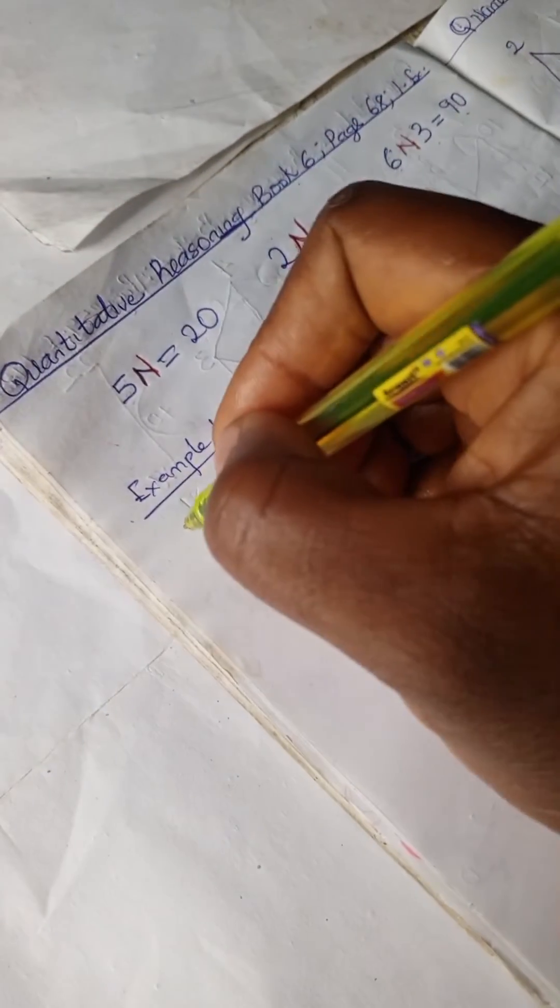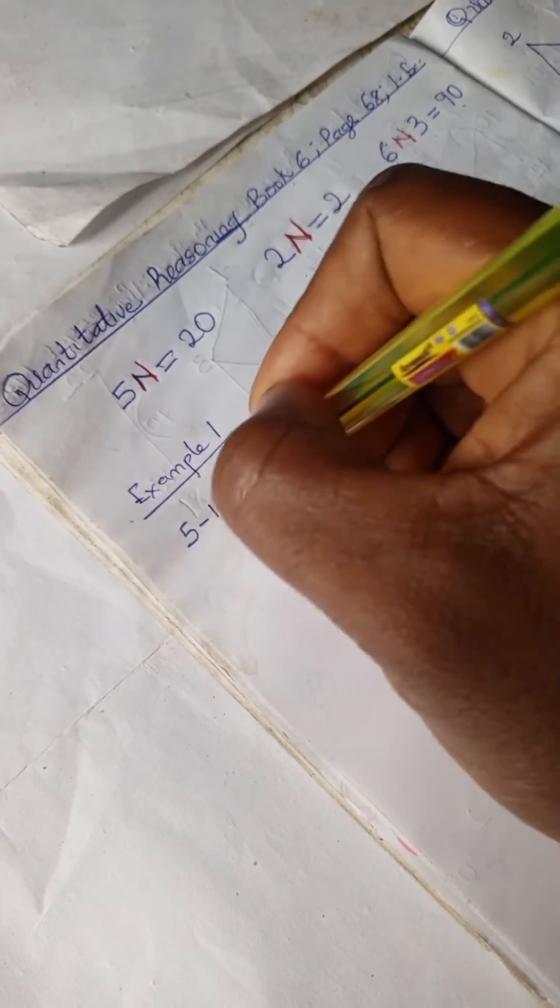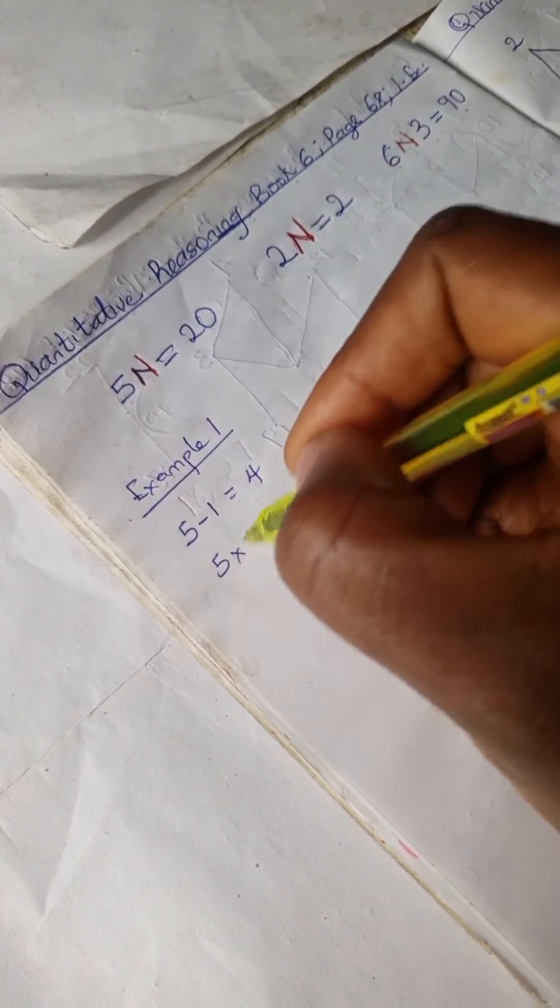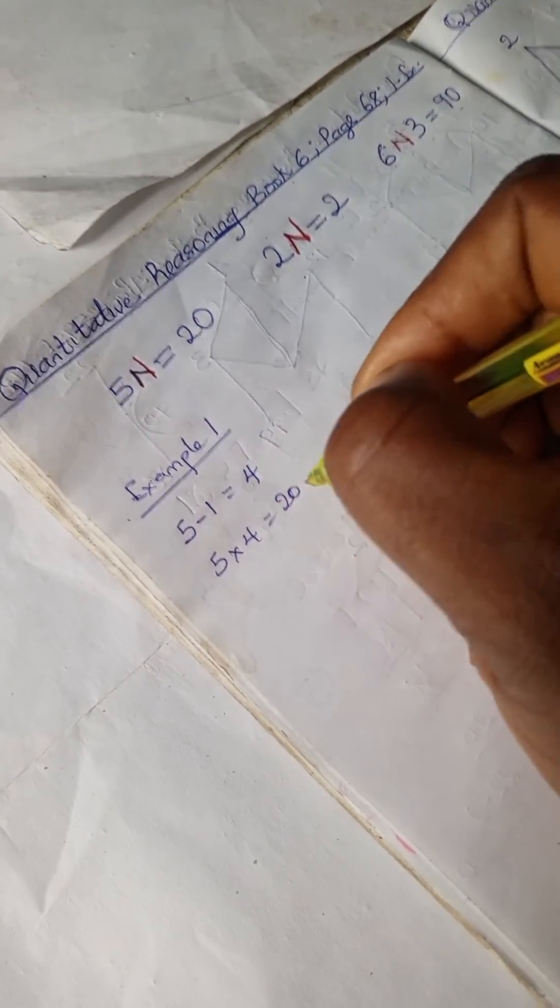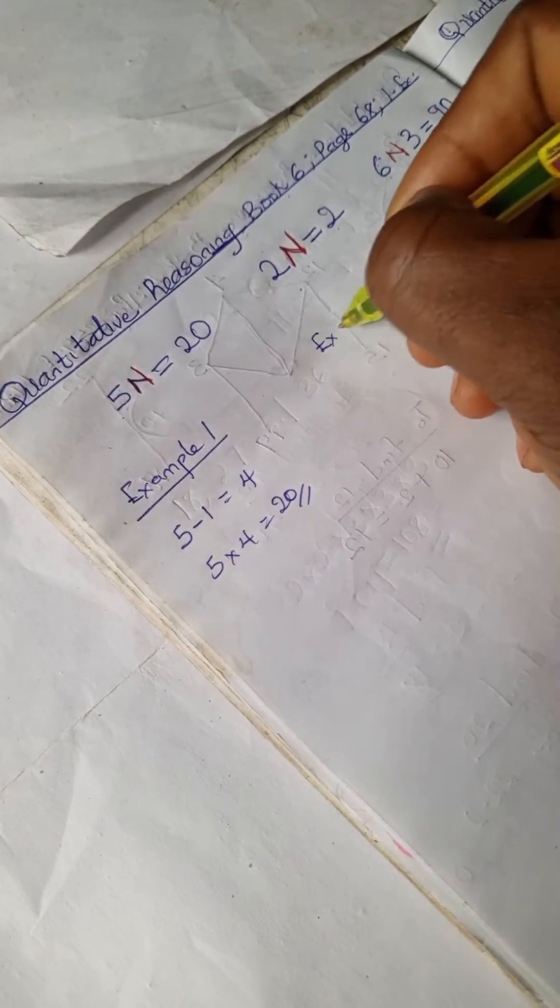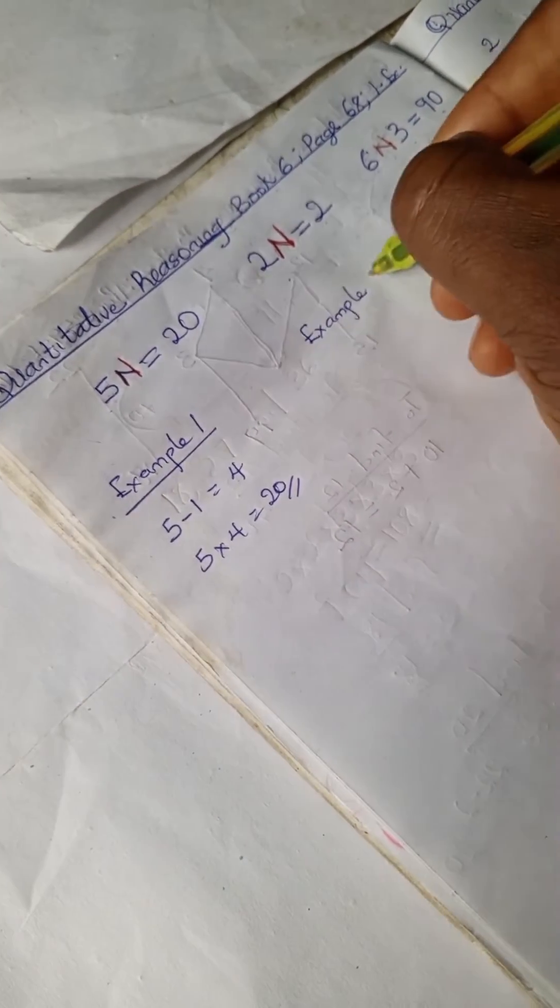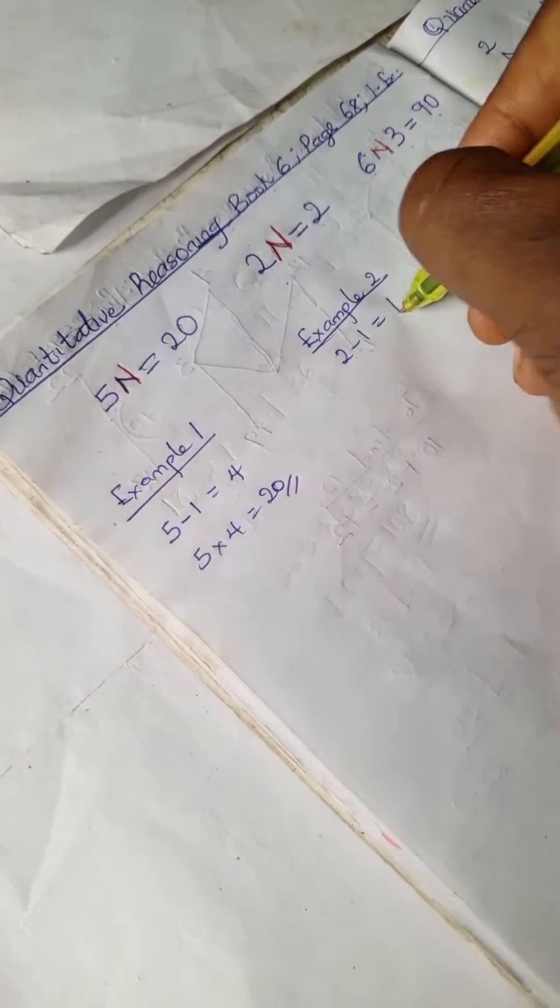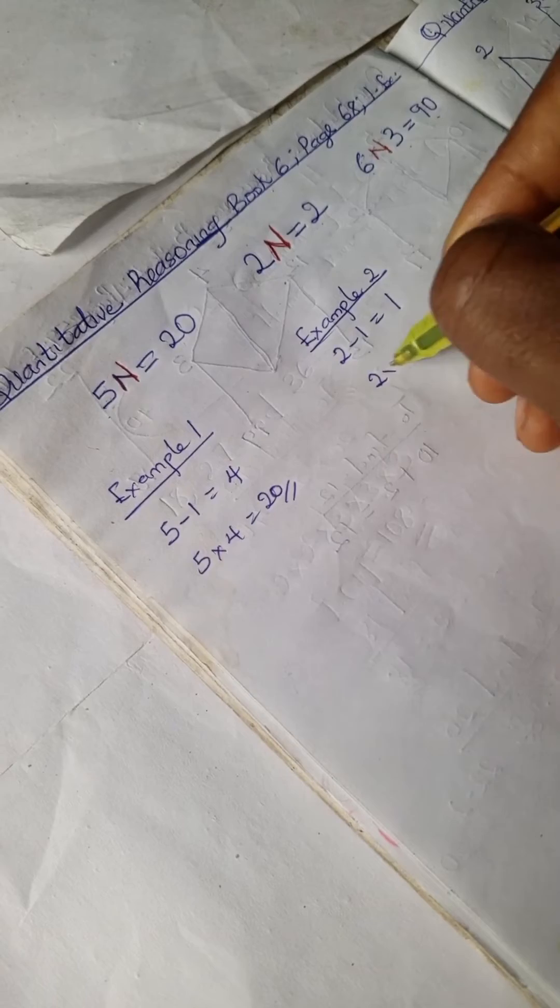Example one: 5 minus 1 is 4, so 5 times 4 is 20. For example 2, we're going to have 2 minus 1 is 1, 2 times 1 is 2.